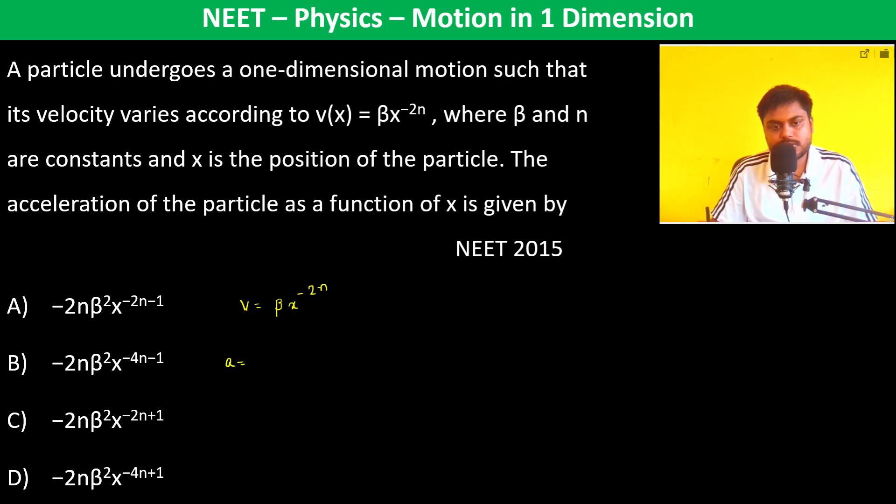So acceleration is equal to dv upon dt. So therefore beta into, let us differentiate this: minus 2n x to the power minus 2n minus 1 into dx by dt.